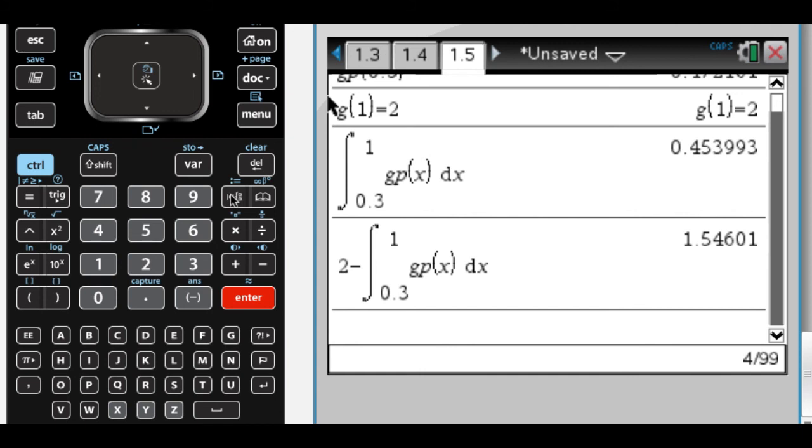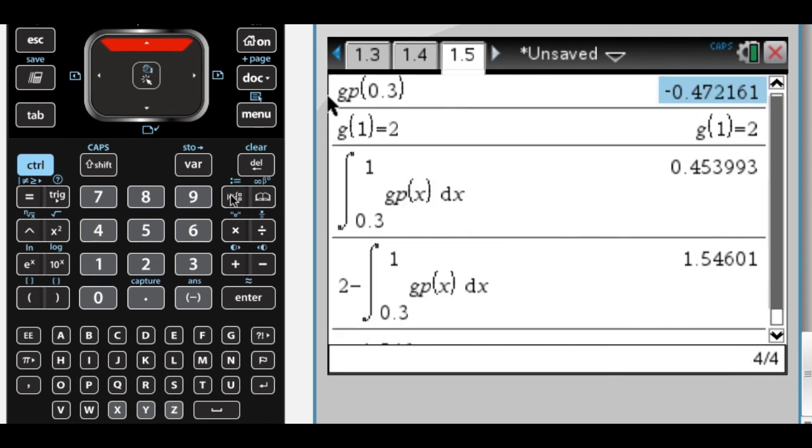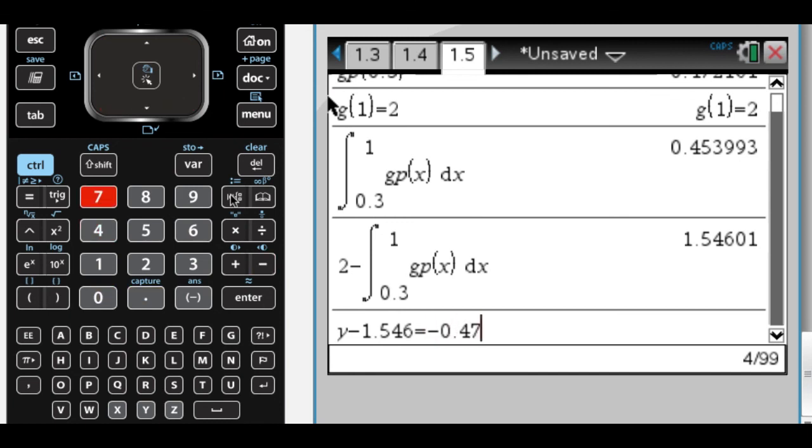So I know the y value. So this is just really ugly. So it's going to be y minus 1.546 equals what I get from my slope? Negative 0.472. Negative 0.472. And then x minus 0.3.